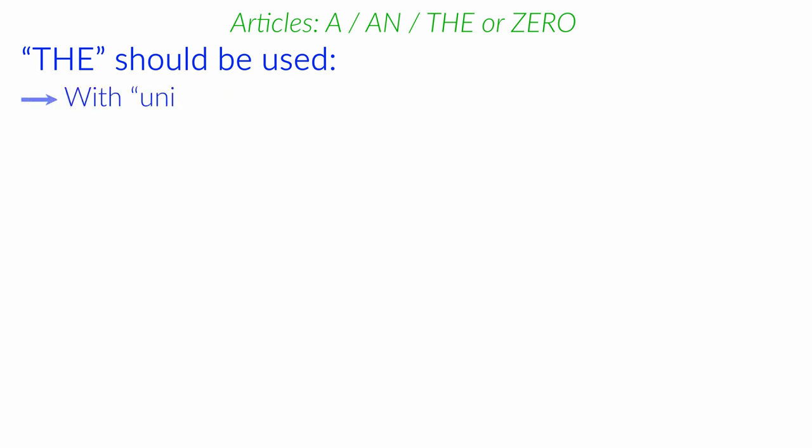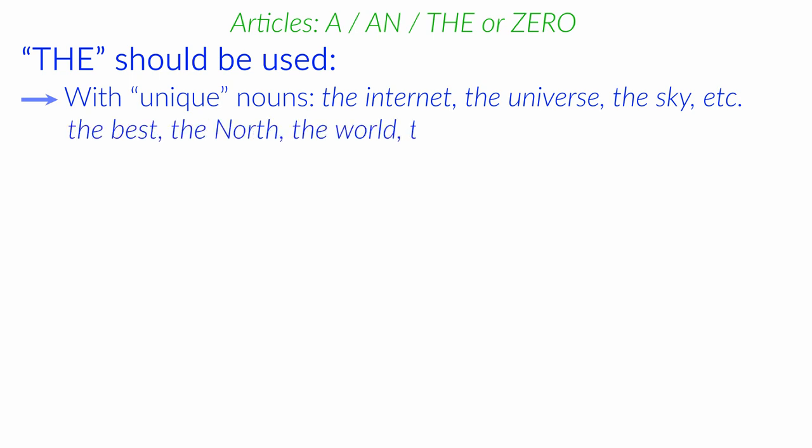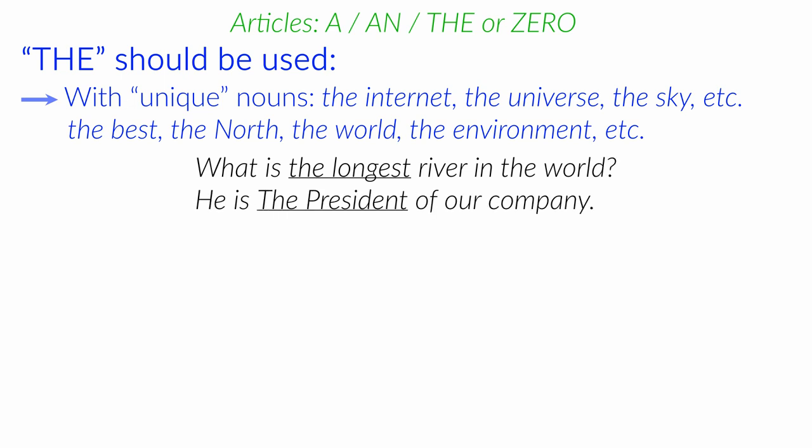With unique nouns. There are a lot of examples of unique nouns. The internet. The universe. The sky. Etc. You can go on. The best. The north. The world. The environment. Etc. For example, what is the longest river in the world? He is the president of our company. Here comes the sun. The Beatles.